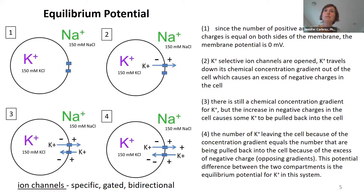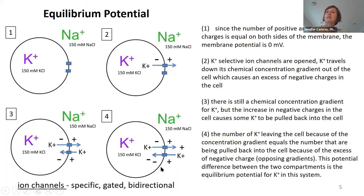In step four, potassium is still leaving because of the chemical gradient, but now it is so negative inside the cell that an equal number of potassium ions are coming in because of the negative charge. Whatever the membrane potential is at this point is what we call the equilibrium potential for potassium.